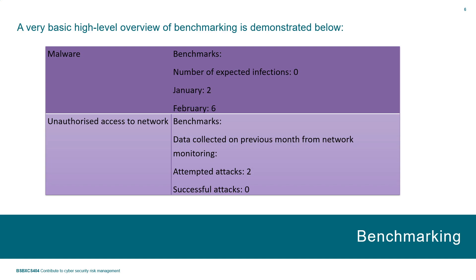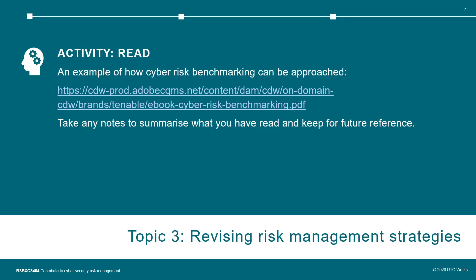Unauthorized access is the next example. We try to record whether any data was accessed without authorization. In our monitoring logs, we can see there were two attempts, but neither of them were successful. If you go off and have a look at the link about benchmarking the system, it will give you some points on how to approach this process, specifically in relation to cyber risk.